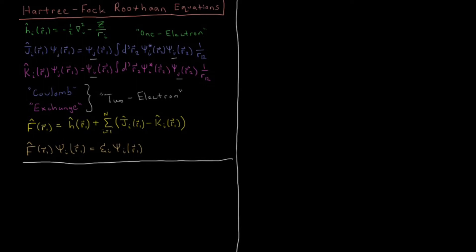Now let's look at the way in which Hartree-Fock theory is generally used in practice to predict orbital energies and the total energies of atoms. This is called the Hartree-Fock-Roothaan procedure or the Hartree-Fock-Roothaan equations.